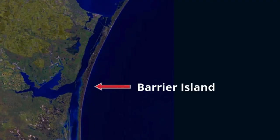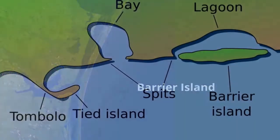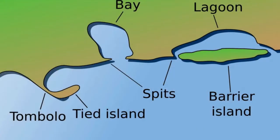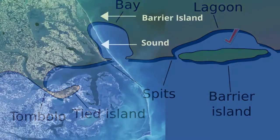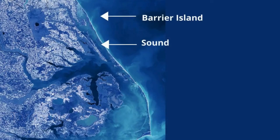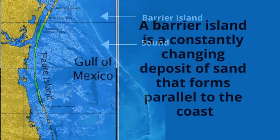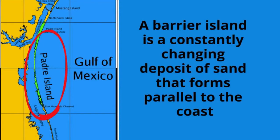A barrier island is a long narrow island that runs parallel to the mainland coast. It is separated from the mainland by a body of water such as a lagoon or a sound, which is a relatively narrow body of water between the mainland and an island. Barrier islands are formed by sediment that is transported by waves and currents from the mainland.